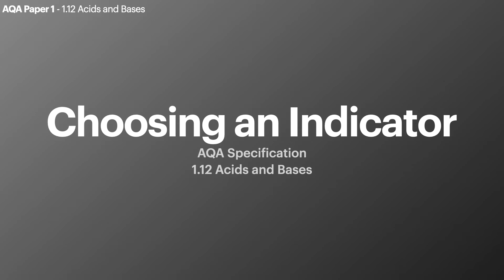Hello chemists and welcome to Bale's Chemistry. In this episode we're going to look at how to choose the best indicator for a titration. This is topic 1.12 of the AQA A-level chemistry specification and it's paper 1 of your final exams.